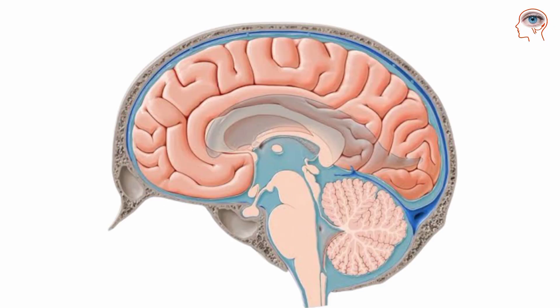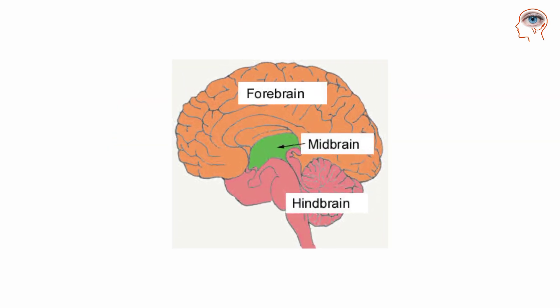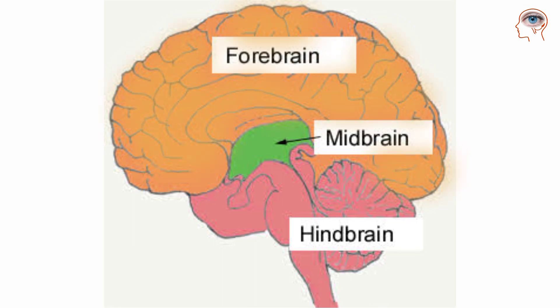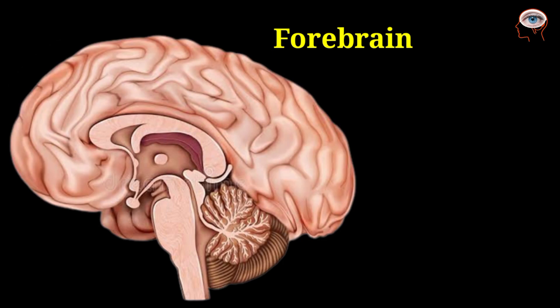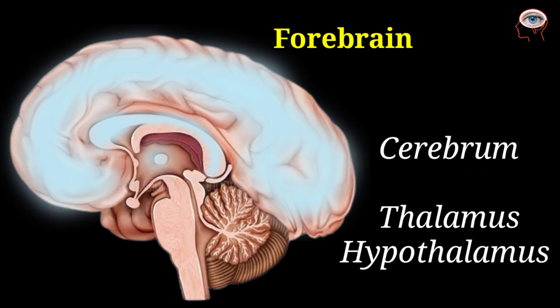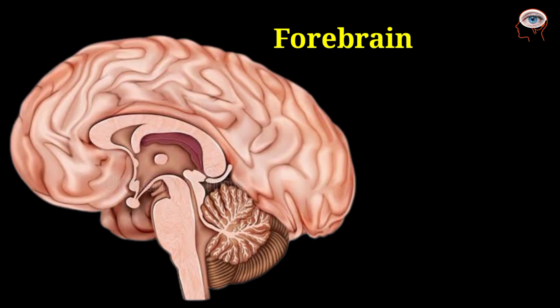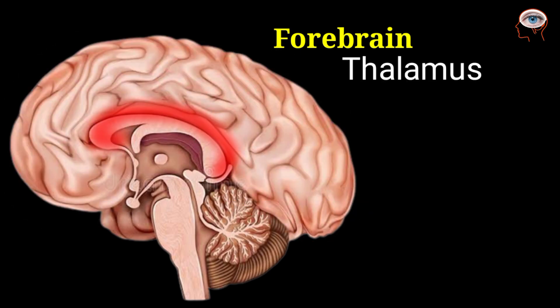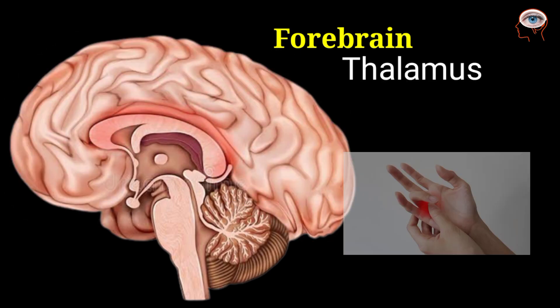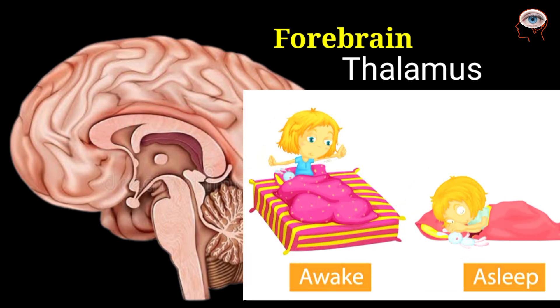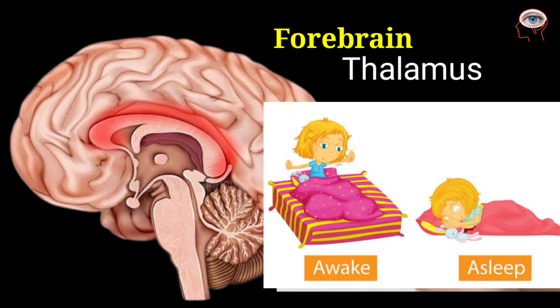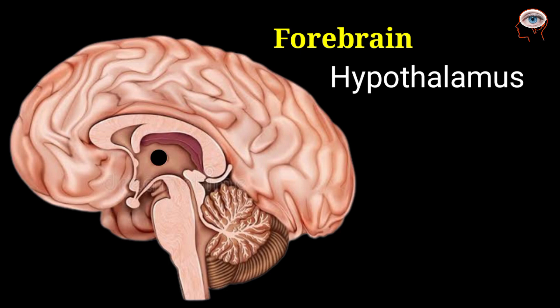The fluid within the ventricles and central canal is called cerebrospinal fluid, or CSF. The brain is divided into three main parts: the forebrain, the midbrain, and the hindbrain. The forebrain is the largest area of the brain, further divided into the thalamus, hypothalamus, and cerebrum. The thalamus is just below the cerebrum and is involved in pain perception and consciousness, such as sleep and awakening.